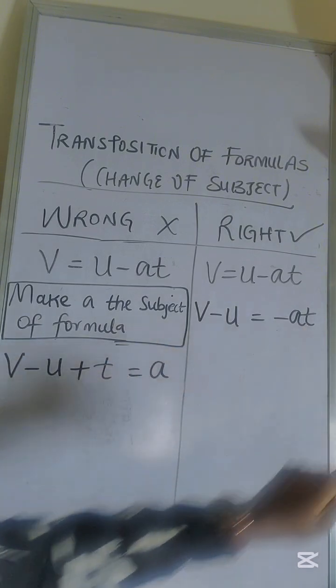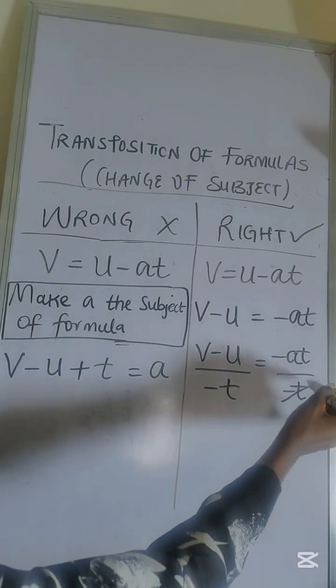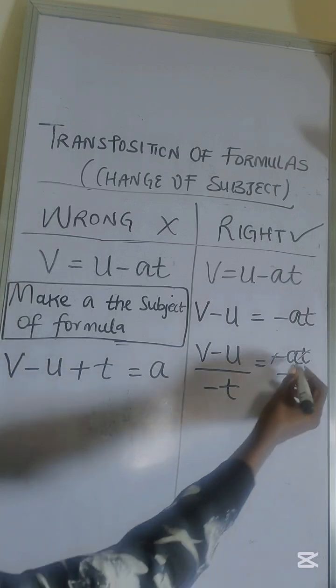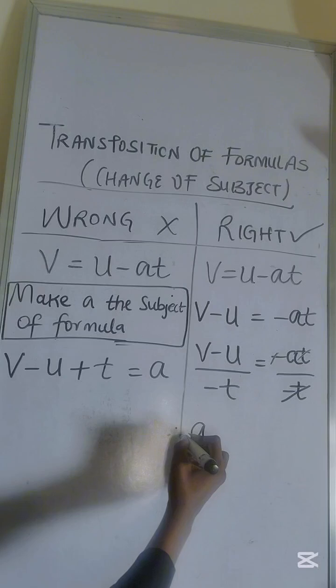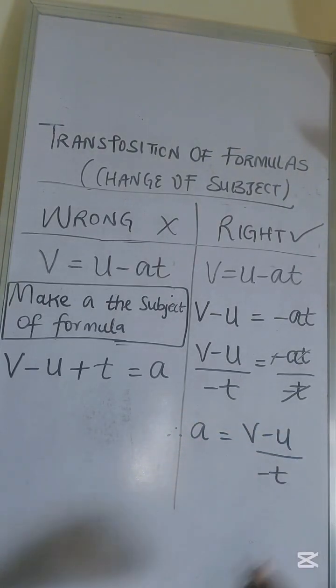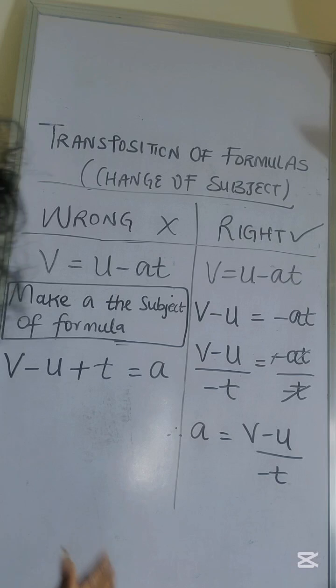Minus t will cancel the minus t up here in the numerator and then you're left with just a to be. And this my friends is how you make a the subject of formula.